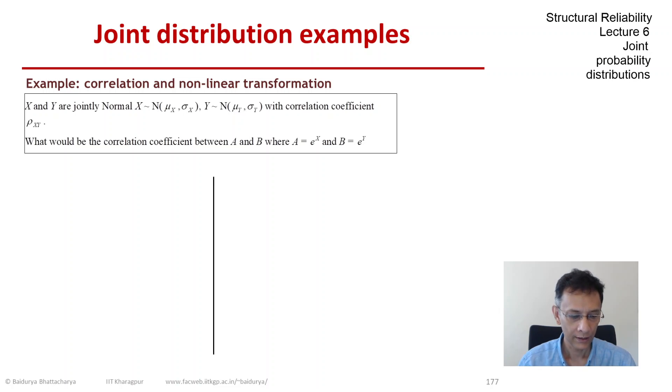This particular problem is brought up now to find the effect of nonlinear transformation on the correlation coefficient rho between x and y. We perform a nonlinear transformation on each of them and obtain a as the exponential of x and b the exponential of y.